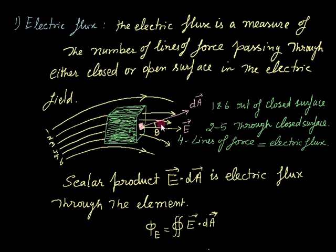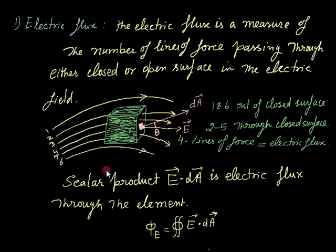In a simple way, if we have to define it mathematically, we consider an elementary area. As you know, area is a scalar quantity, but in vector terms we consider the direction perpendicular to the plane of the area, denoted by vector dA. The direction of the electric field E and the angle between these two is theta. The scalar product E dot dA gives the electric flux passing through this elementary area.